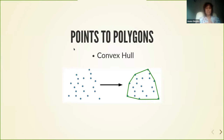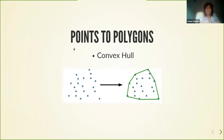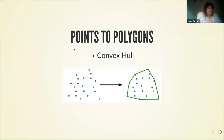The convex hull algorithm allows you to ingest a set of points and define the smallest convex set that contains or encloses those points. Based on this, you can transform a set of points into a polygon, which is exactly what we wanted to do.